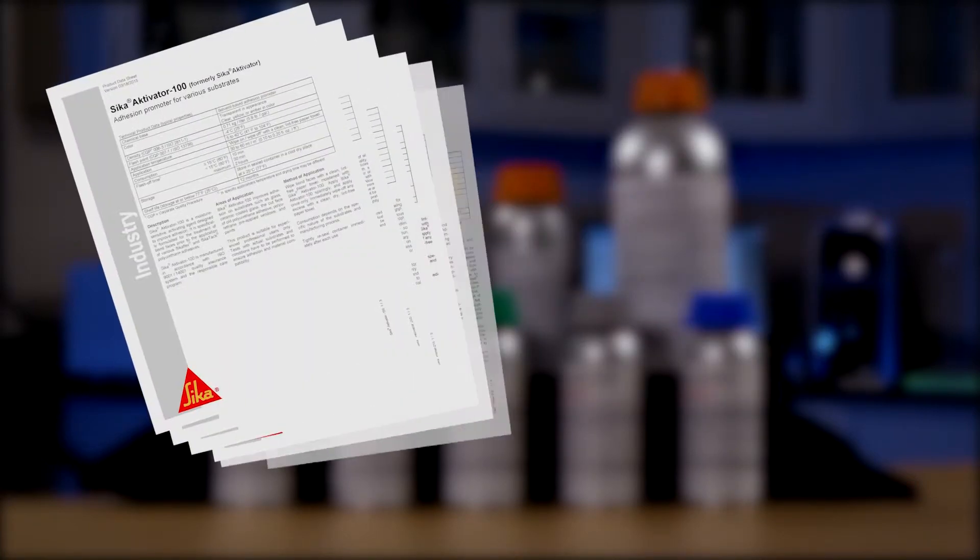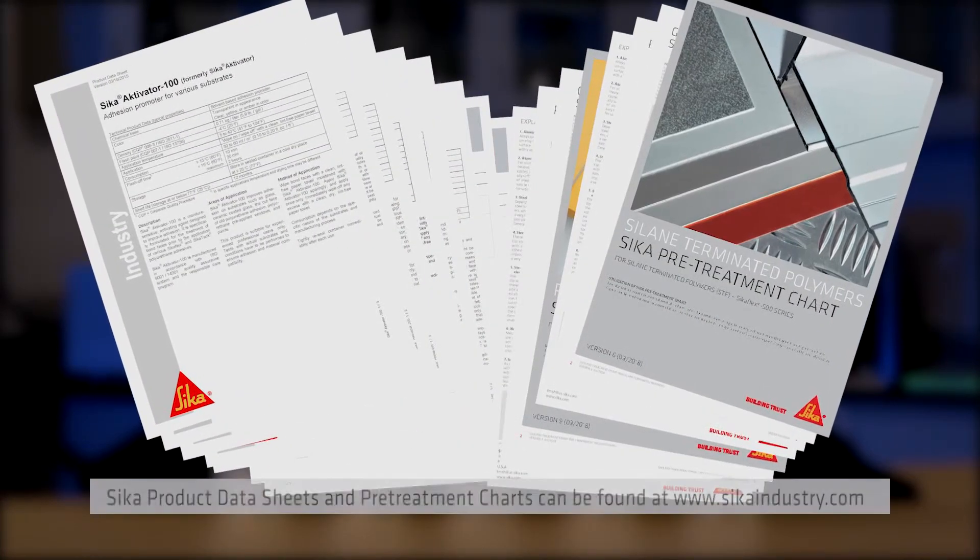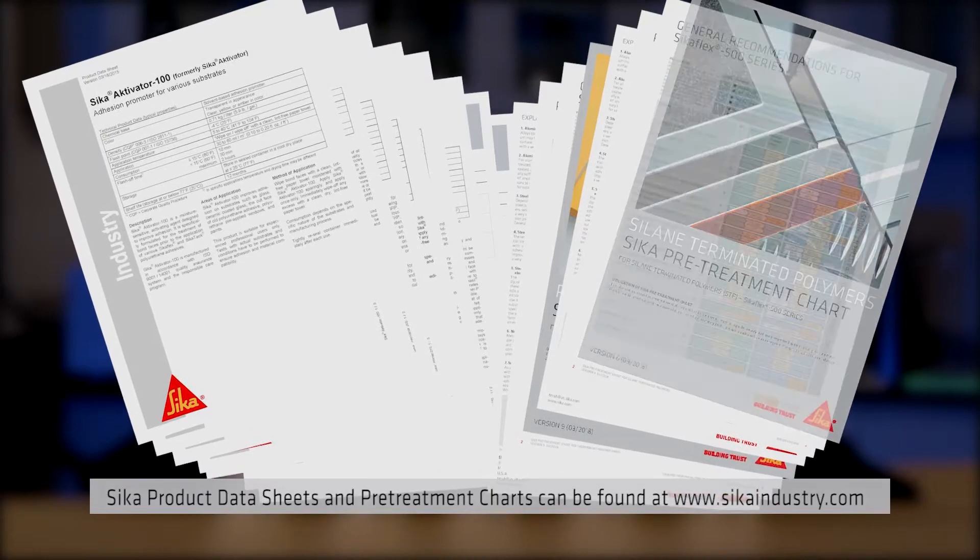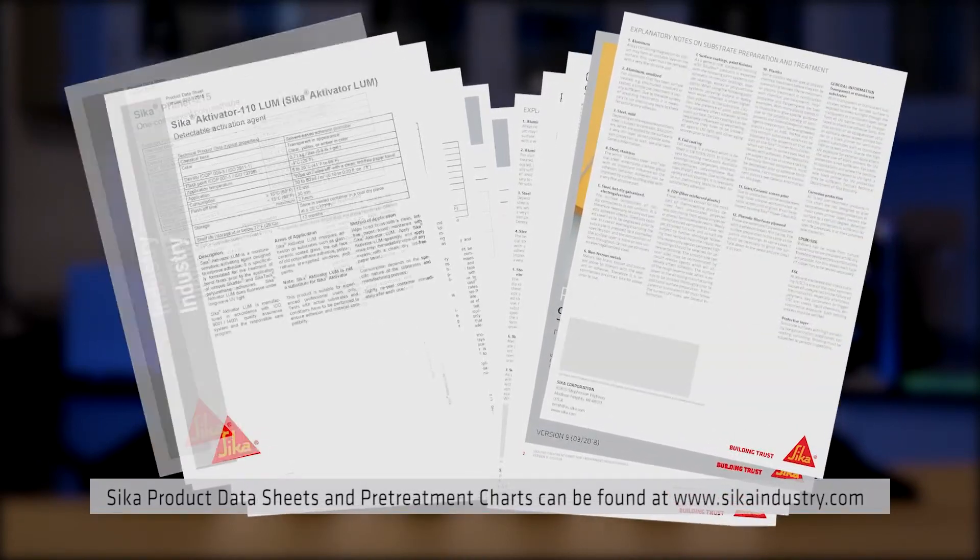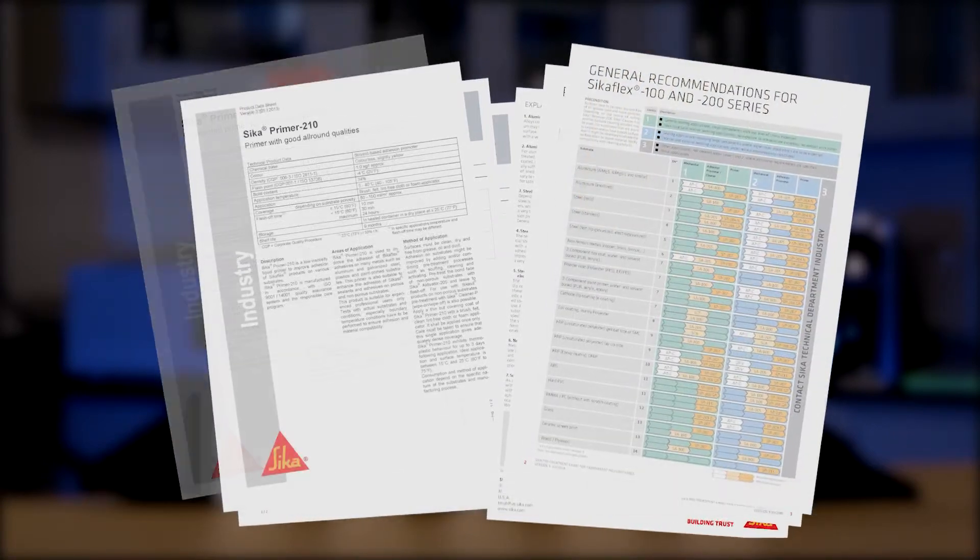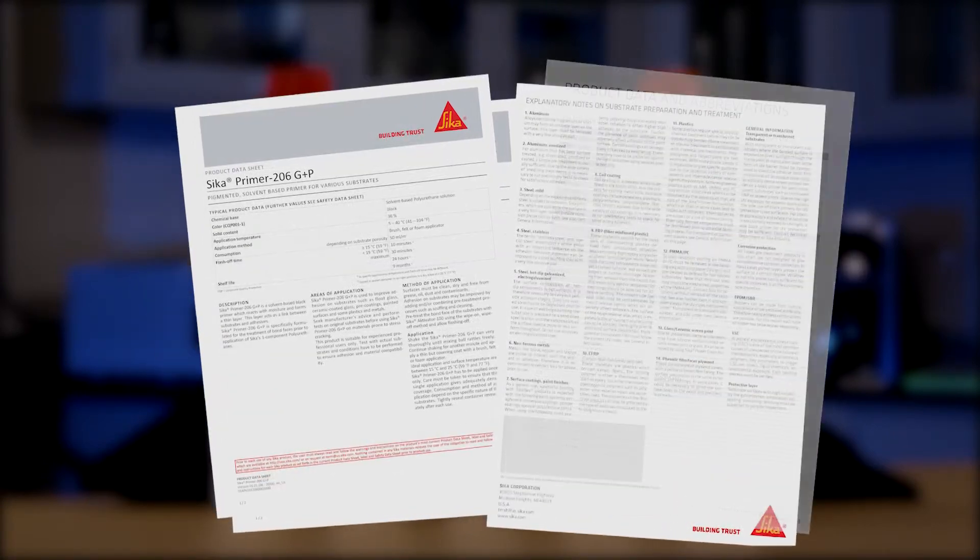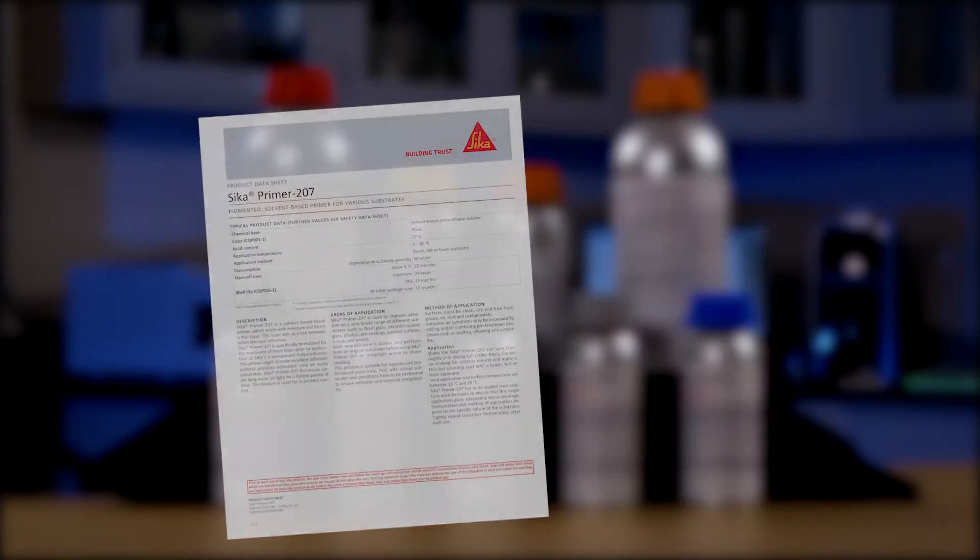Sika product data sheets and Sika pre-treatment charts offer a general guide for the preparation of substrates prior to bonding. These documents also contain very important and useful information about substrate characteristics. In any case, it is mandatory to evaluate suitable surface preparation procedures by testing with original substrates.